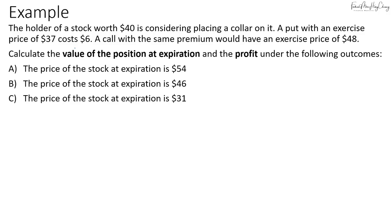Let's look at an example where the holder of a stock worth $40 is considering placing a collar on it. There is a put with an exercise price of $37 that costs $6 premium, and a call option with the same $6 premium that has an exercise price of $48. We need to calculate the value of the position at expiration and the profit if the stock price at expiration is $54, $46, or $31.